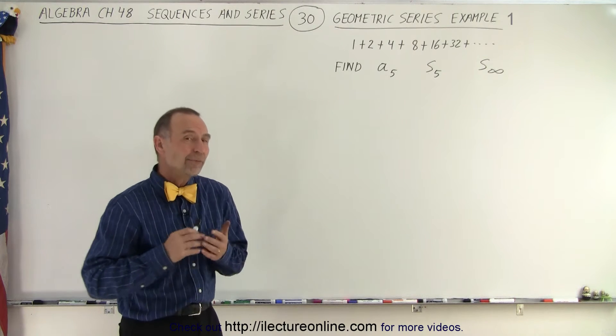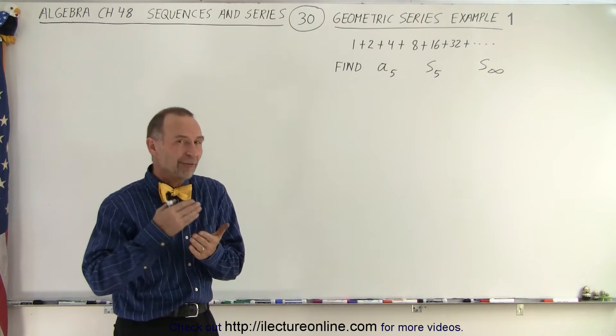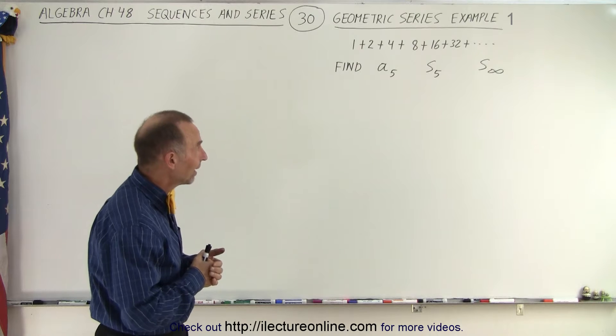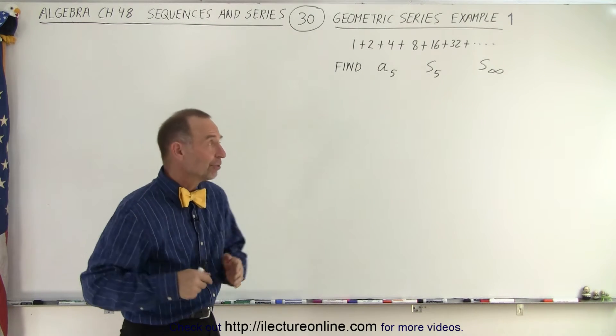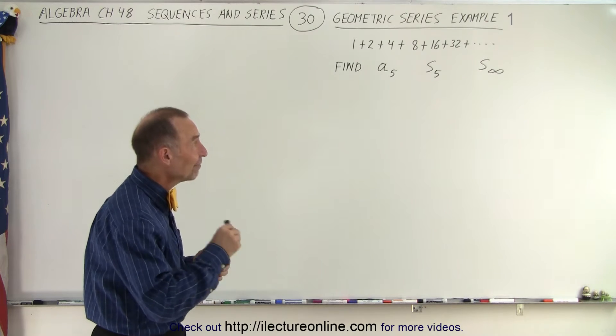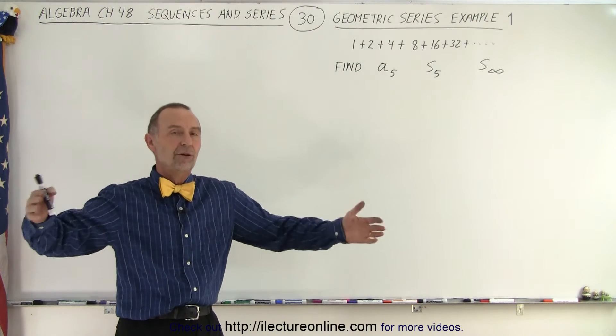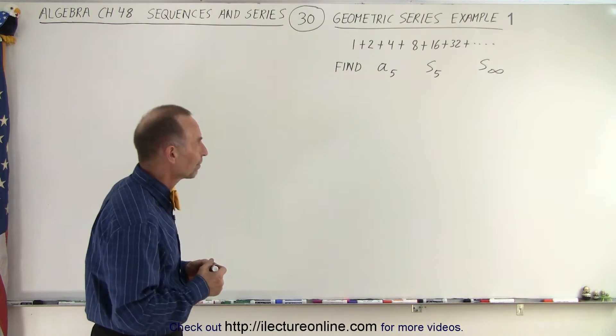We're supposed to find A sub 5, which means we're supposed to find the fifth number in the series, S sub 5, which is the partial sum of the first five numbers, and S infinity, meaning the infinite sum of that particular series.